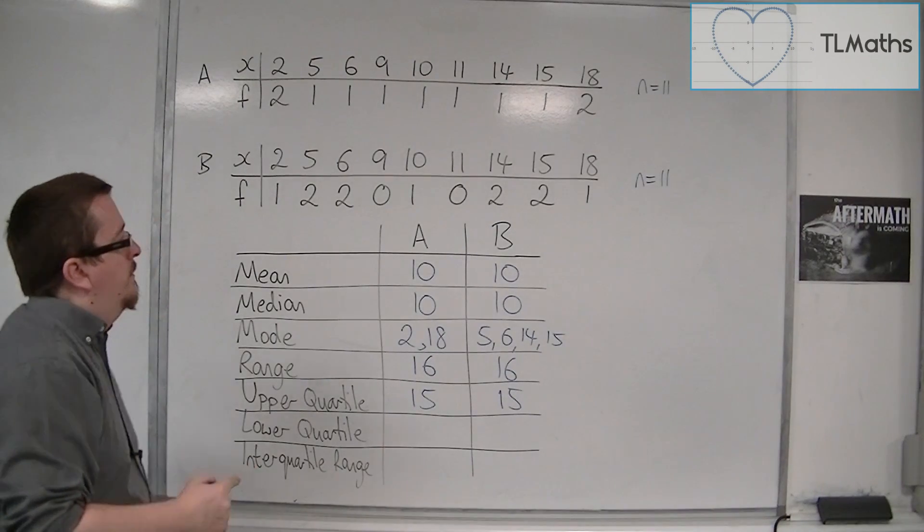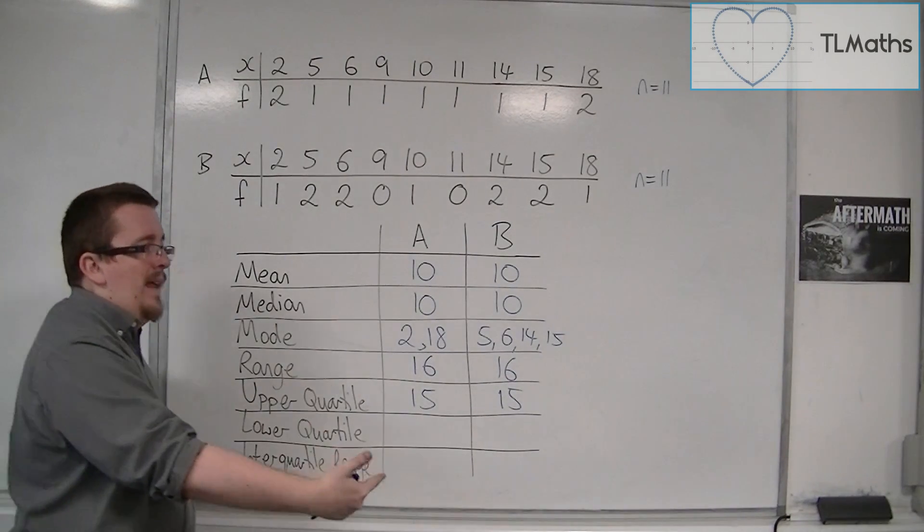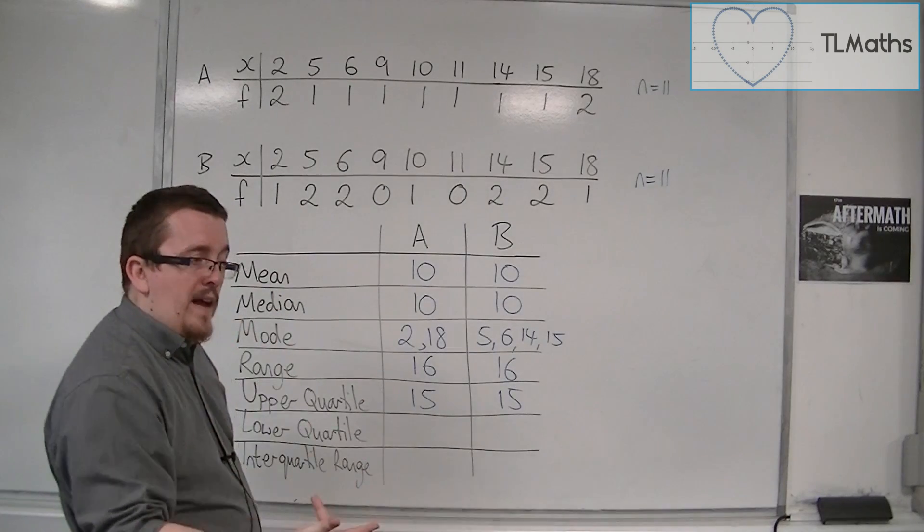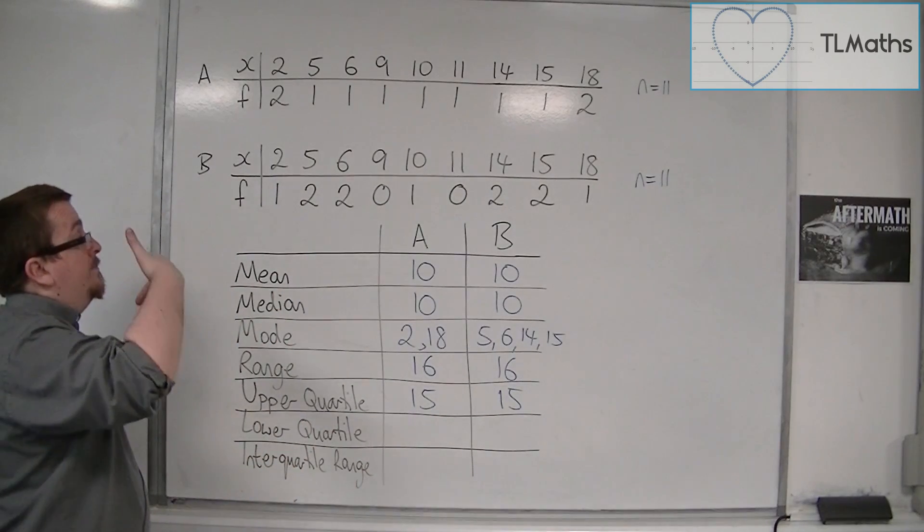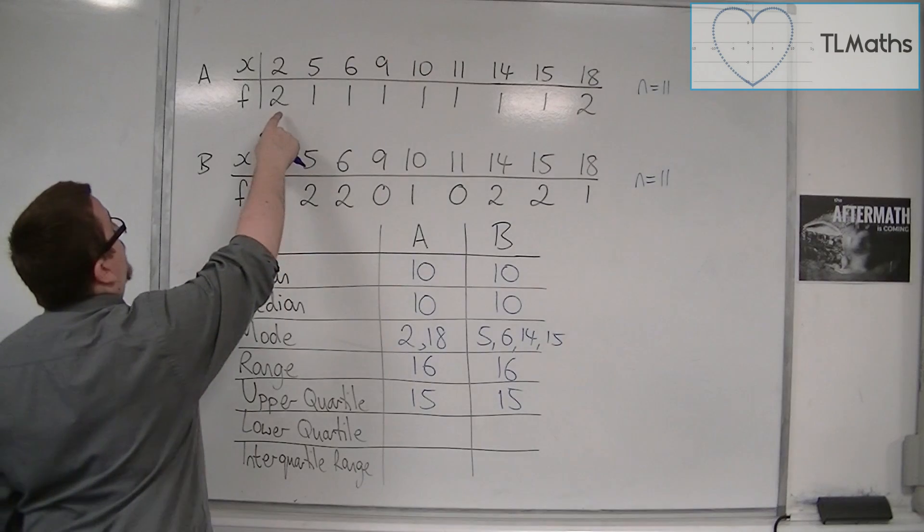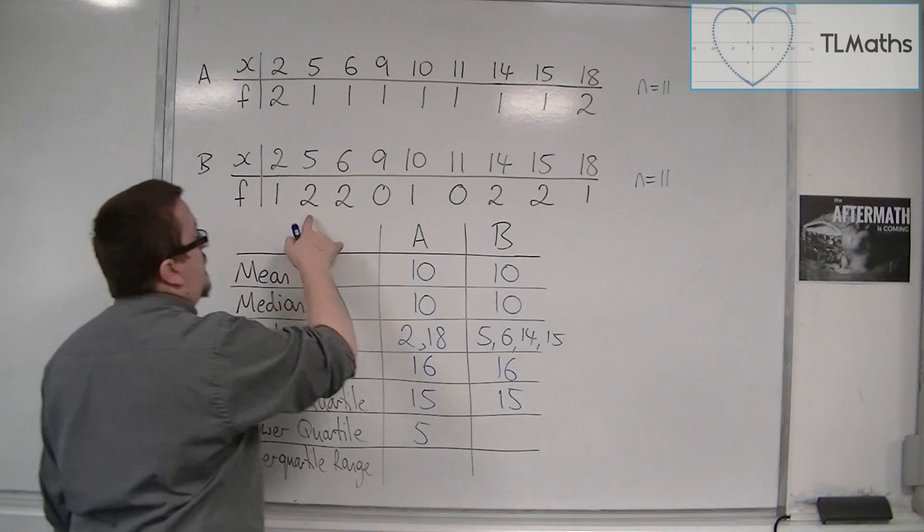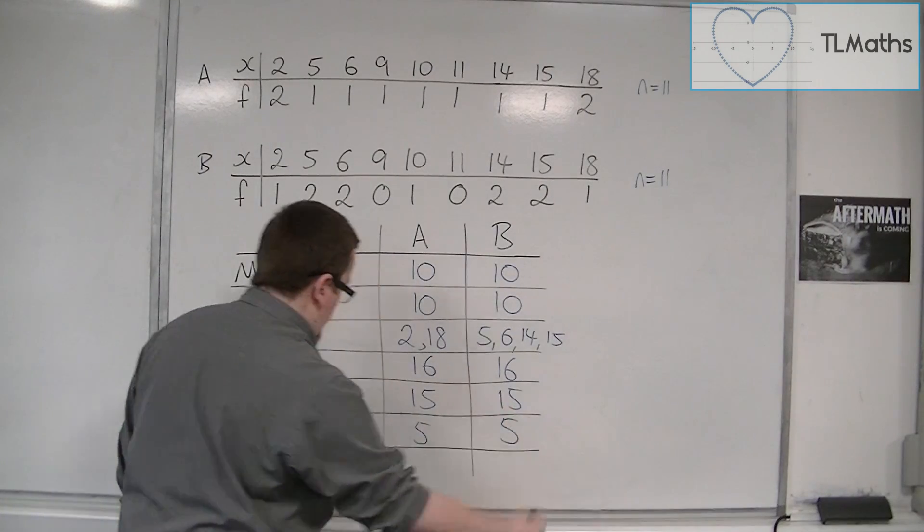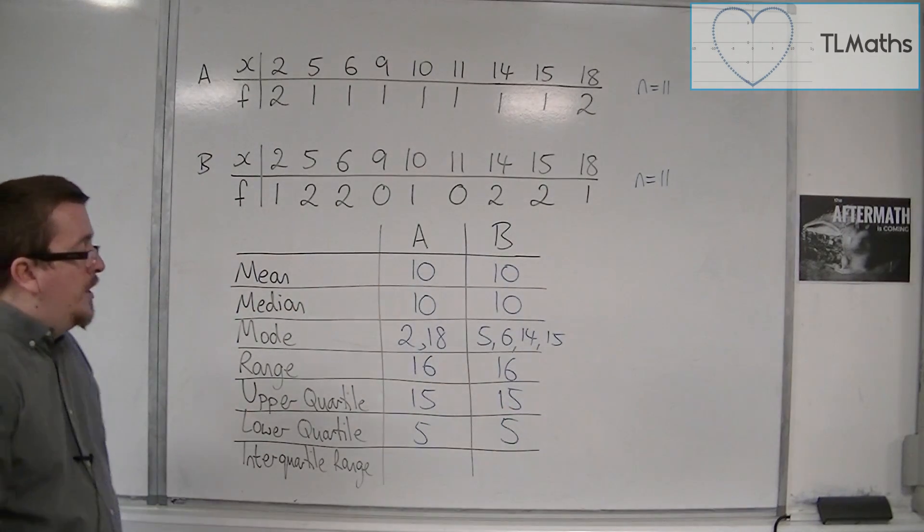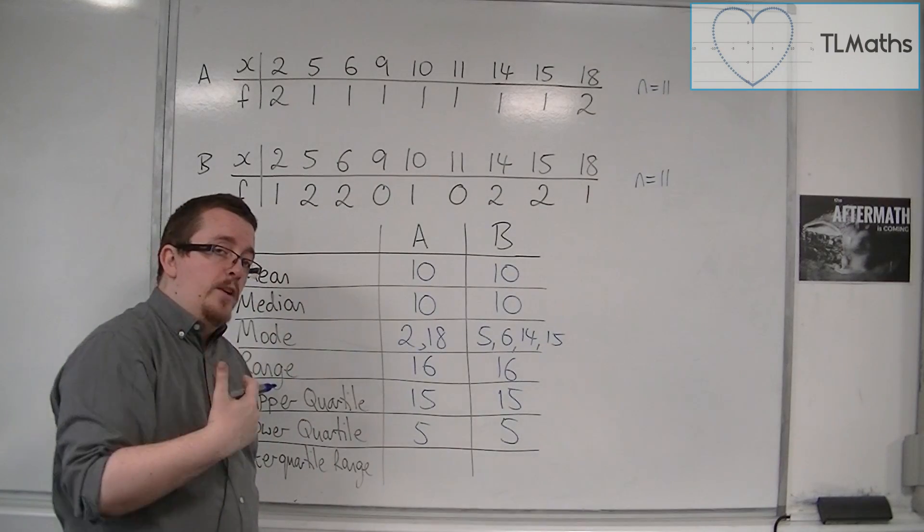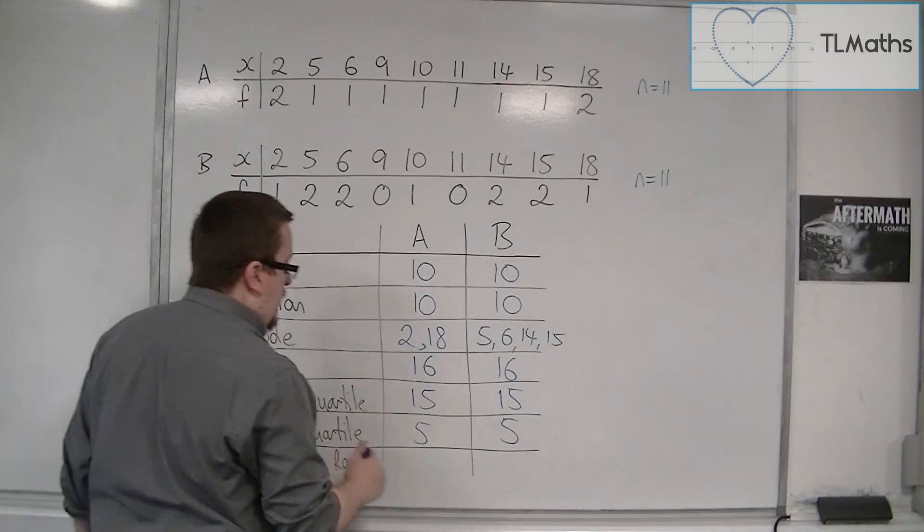For the lower quartile, add 1 to 11, that gets us 12. A third of that is 3. So it's the third item: 1, 2, 3. So that's 5. And 1, 2, 3, that's 5 again. So the interquartile range is the upper quartile take away the lower quartile: 15 take away 5, 10.